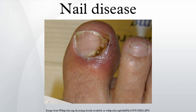Onychodystrophy is a deformation of the nails that can result from cancer chemotherapy, which includes bleomycin, hydroxyurea, or 5-fluorouracil. It can include discoloration of the nail, or trophia.